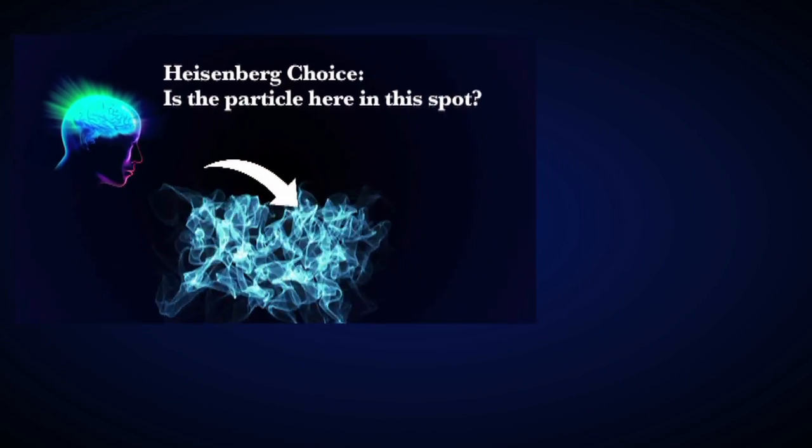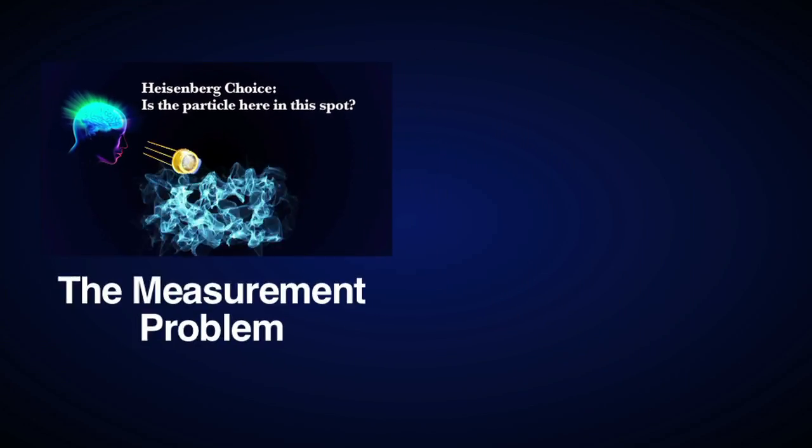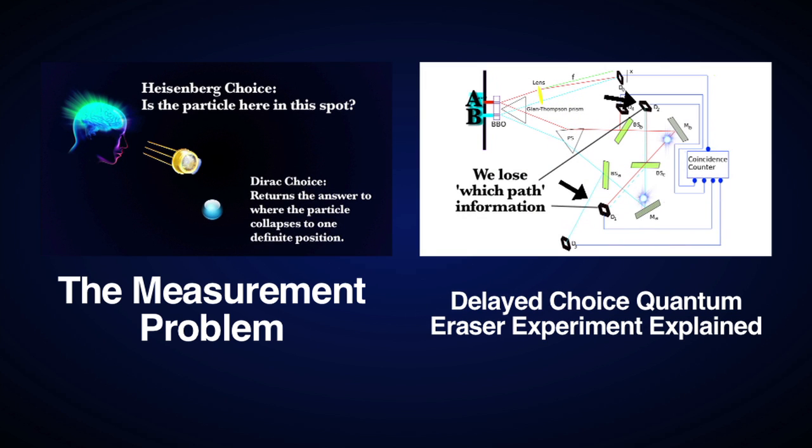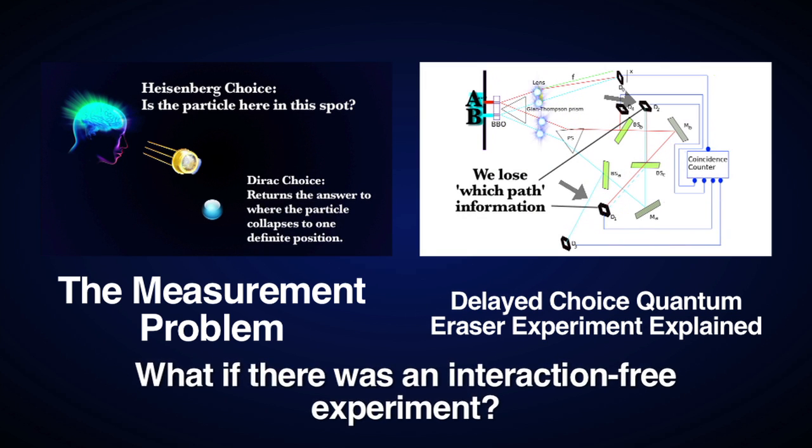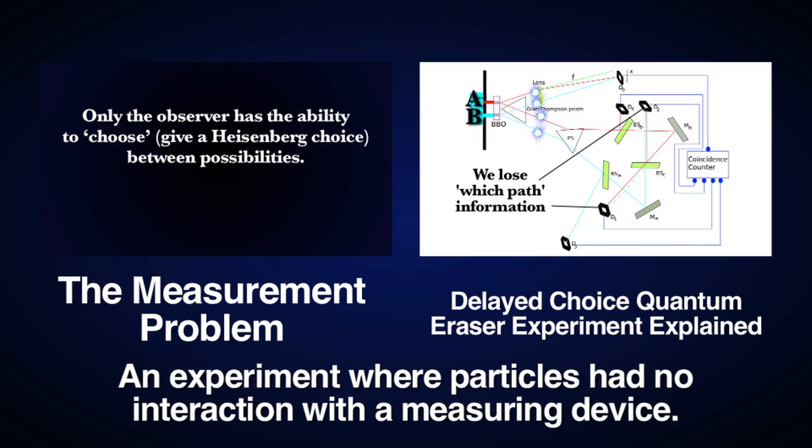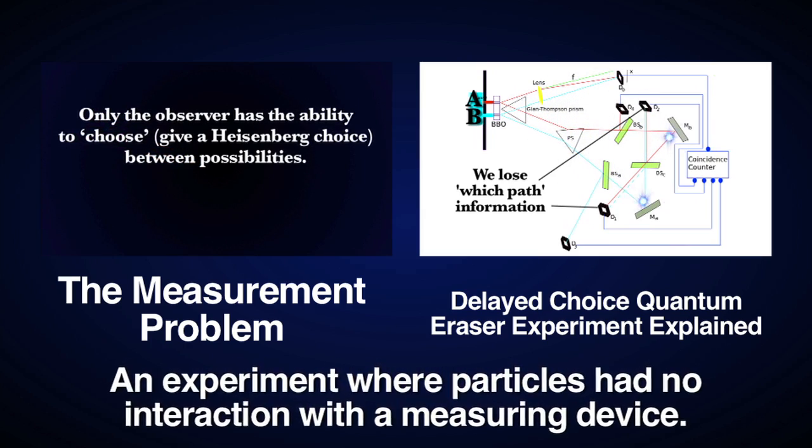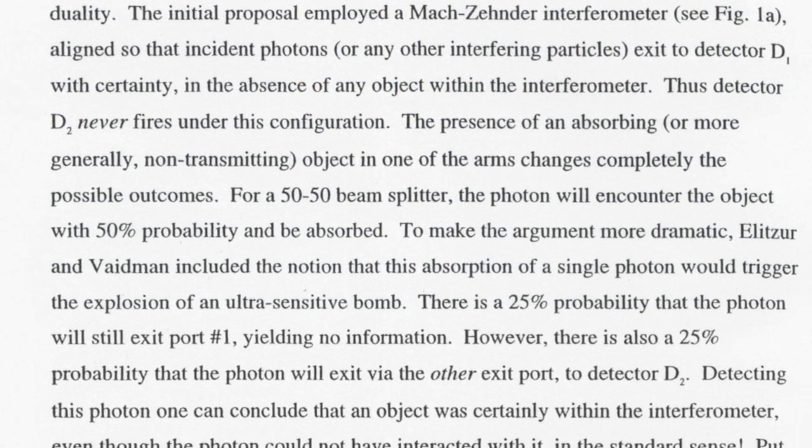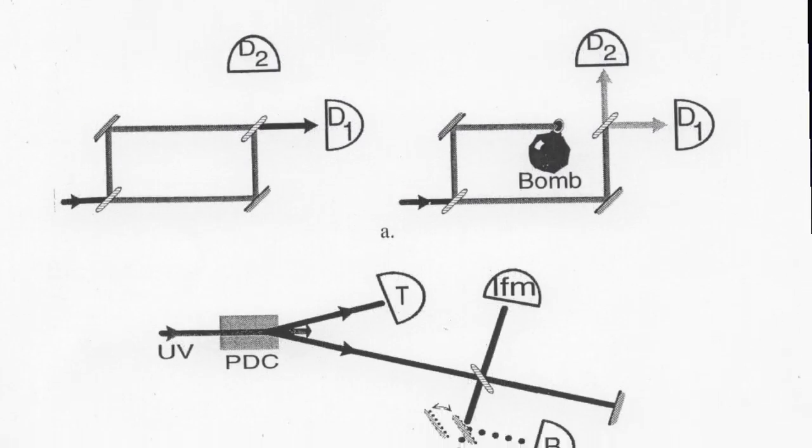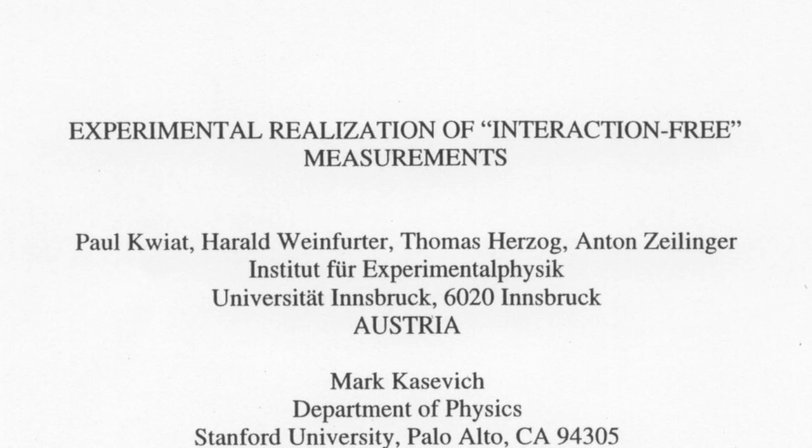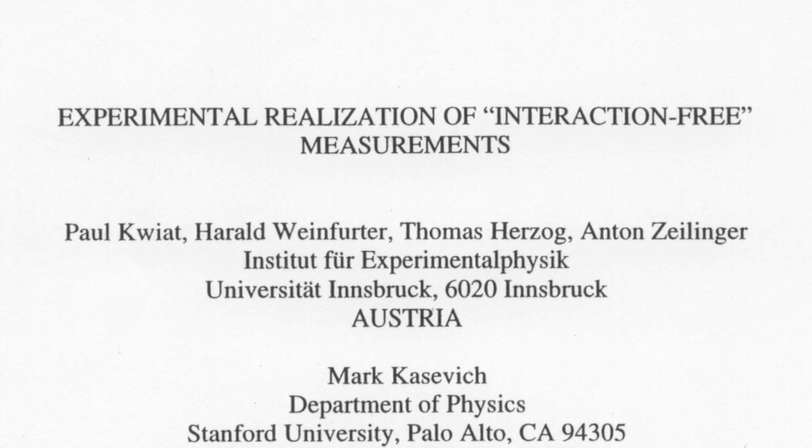We've already dealt with this objection thoroughly in our video The Measurement Problem, in our video which explains the delayed choice quantum eraser experiment. But what if there was an interaction free experiment? An experiment where particles have no interaction with a measuring device and collapse is still caused. Well in fact there was just such an experiment performed in 1994 by Anton Zellinger and his team. The paper on the experiment was called Experimental Realization of Interaction Free Measurements.